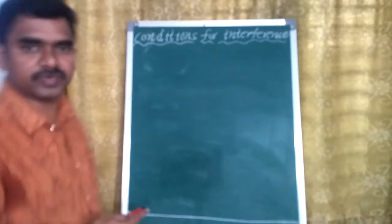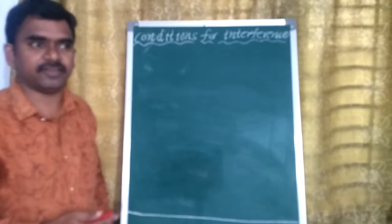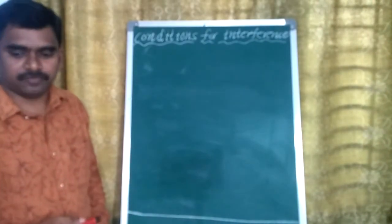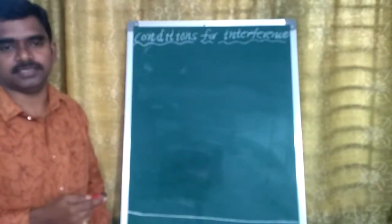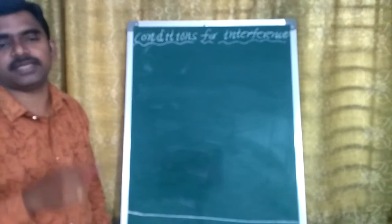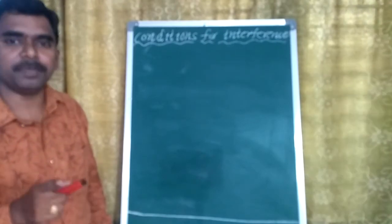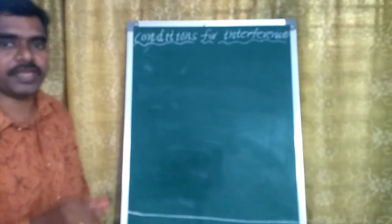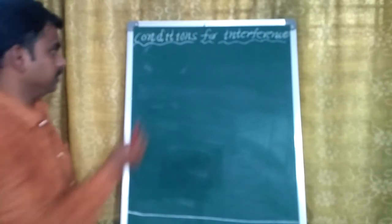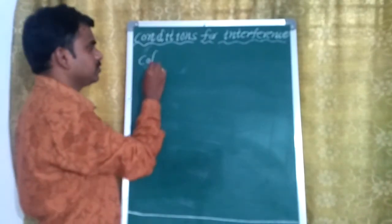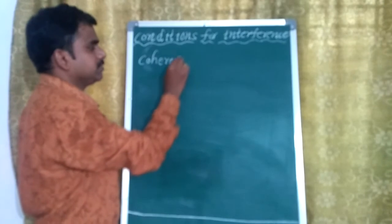Now, the conditions for interference. The first condition is the waves participating in the interference should be coherent waves. There should be coherent waves. Coherence.